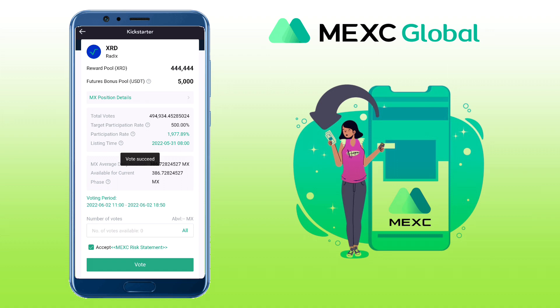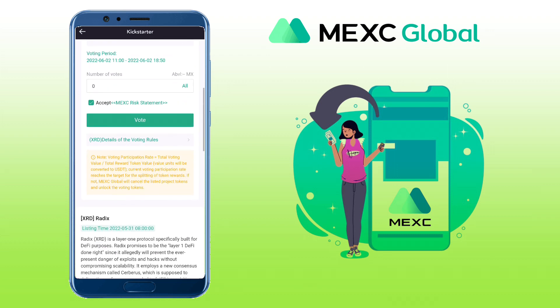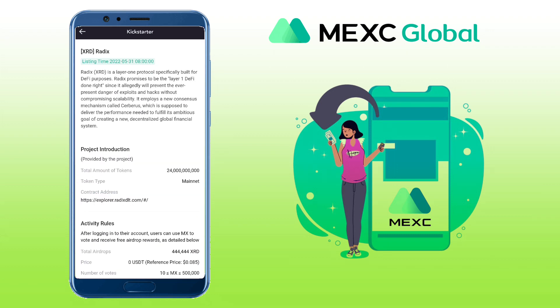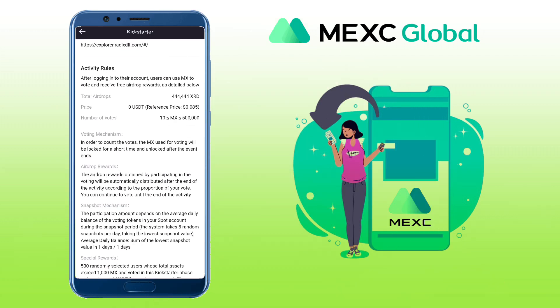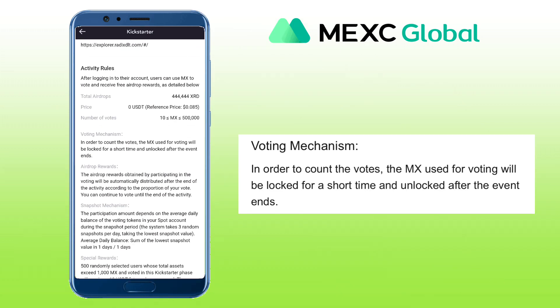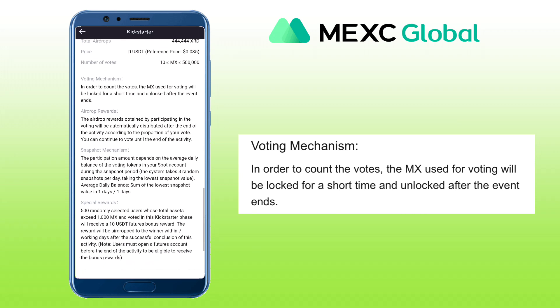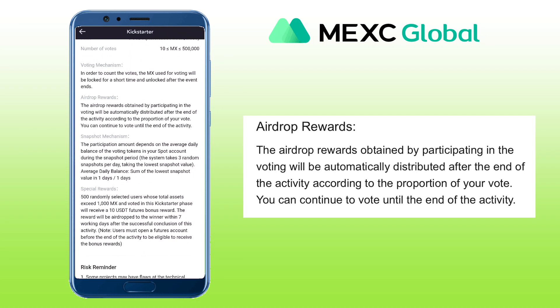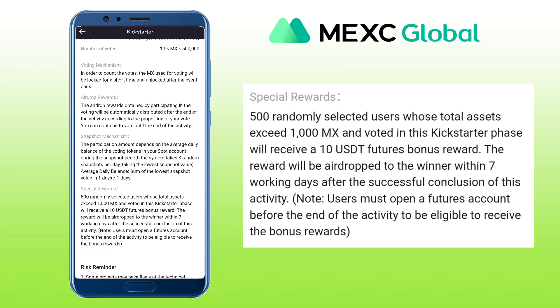You can also scroll down and see more details of the project you have voted and joined, as well as the activity rules. Basically, for the event rules after joining, your MX tokens used for voting will be locked for a short time and unlocked after the event. Then the airdrop reward obtained by participating in the voting will be automatically distributed after the event and will be sent to your spot wallet.